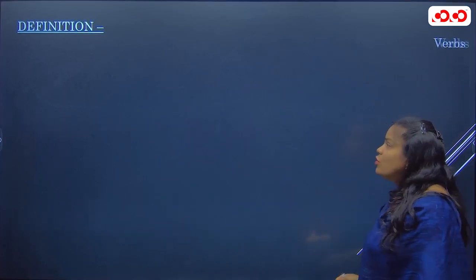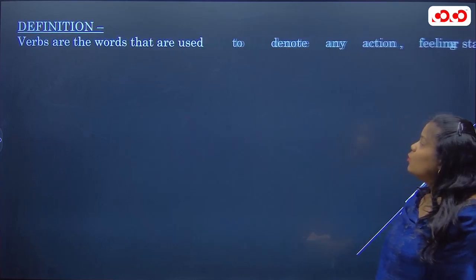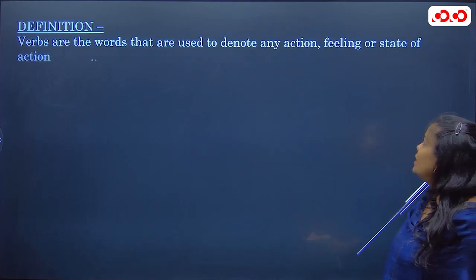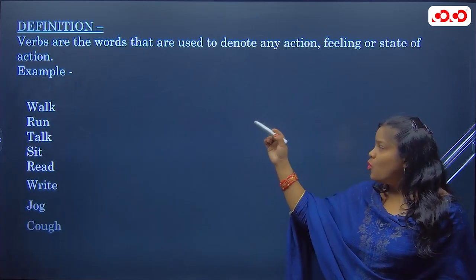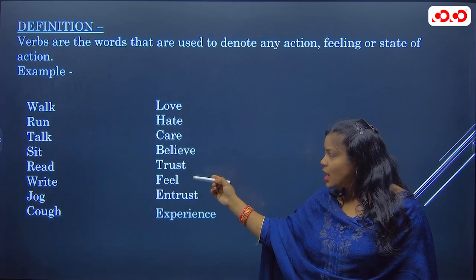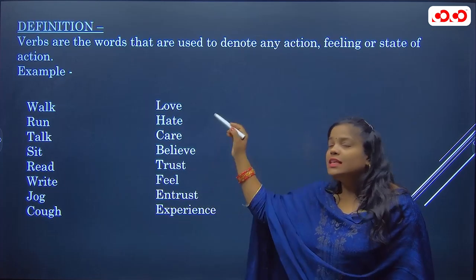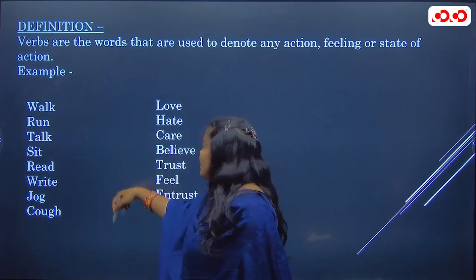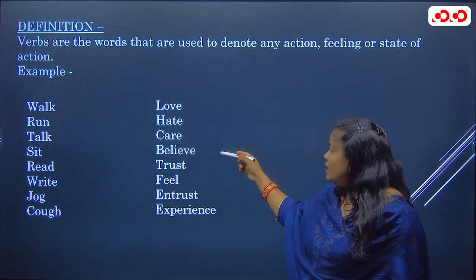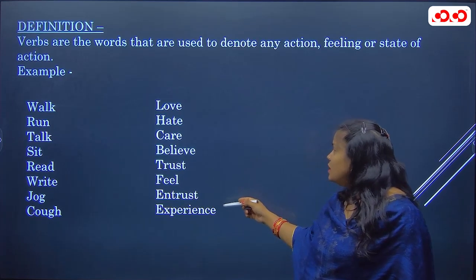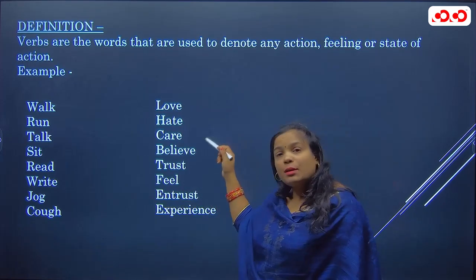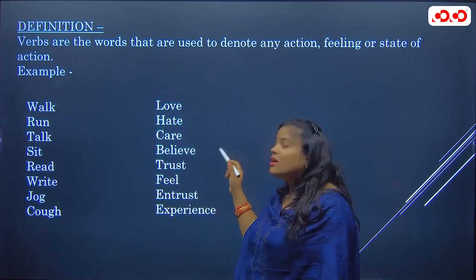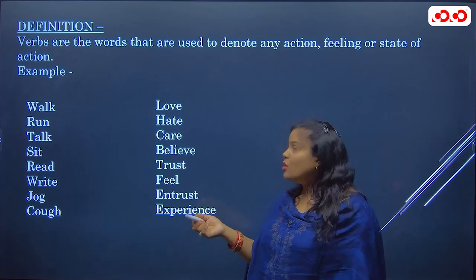Let's start with the definition of verb. Verbs are words used to denote any action, feeling, or state of any action. For example, walk, run, talk, sit, read, write, jog, cough — these are all actions. Then love, hate, care, believe, trust, feel, experience — these are names of feelings. You love someone — that is also a work, a kriya is happening.